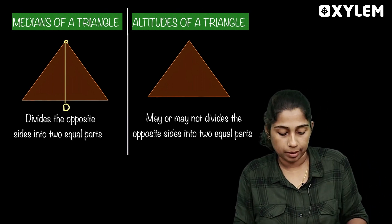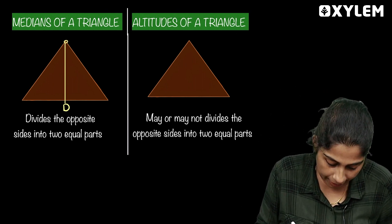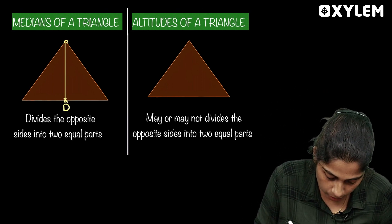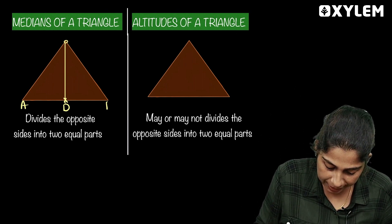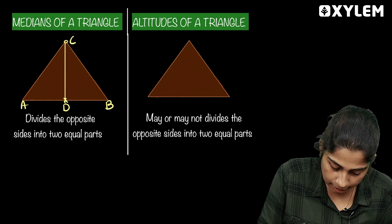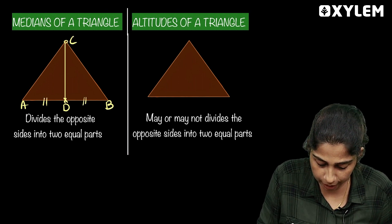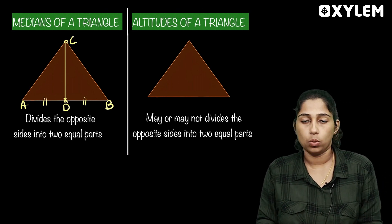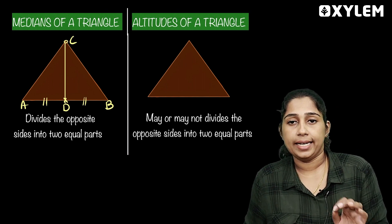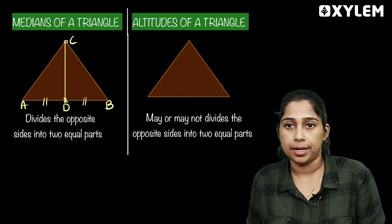The midpoint — this is the median. This is called the midpoint. AD is equal to DB. AD is equal to DB.